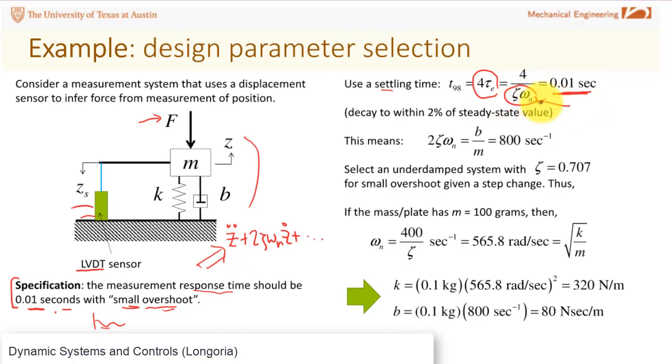Once you know this value, this specification - four time constants means you want it to be to within 2% of the steady value in 0.01 seconds. Now you can use that to find - two times that is equal to 800. So now you've got a relationship between B and M. To have a small overshoot, you choose that your zeta is going to be that design value I told you about, minimal overshoot, fastest response.